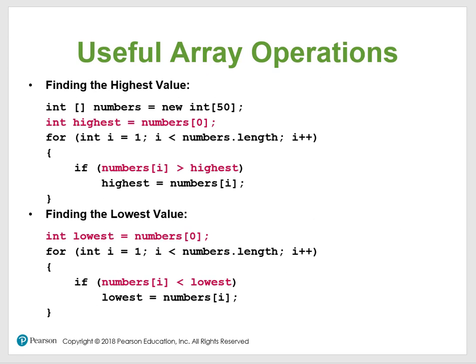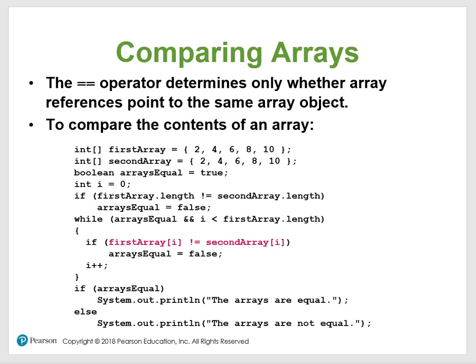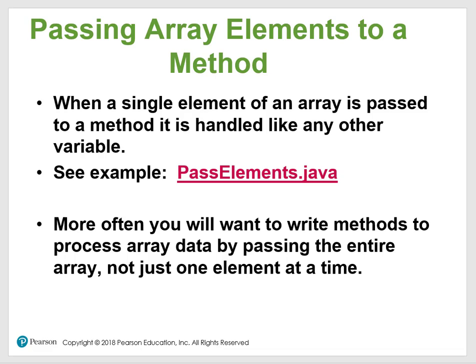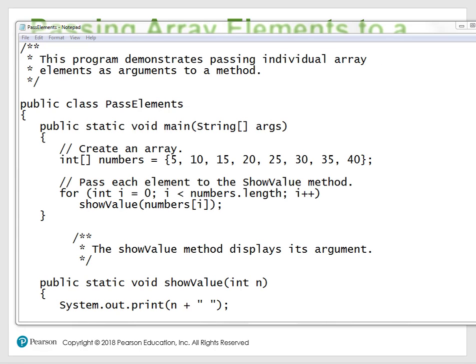So that covers copying arrays and what's actually taking place. The next part is passing an array element to a method. When a single element of an array is passed to a method, it's treated like a regular variable — you're passing one element. But more often, you want to write the method to process the entire array, not just one element. This is very crucial.